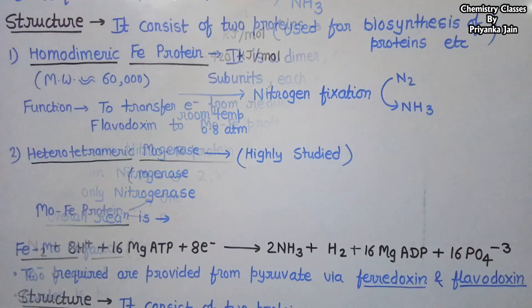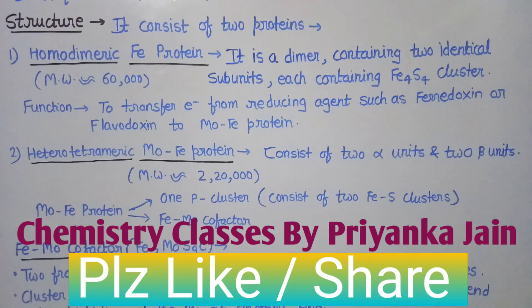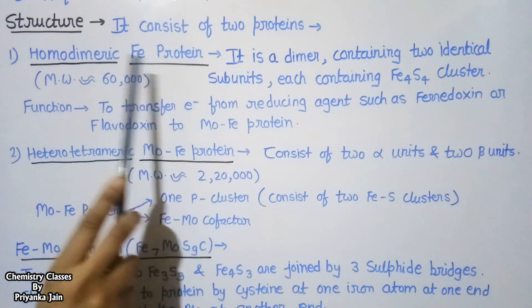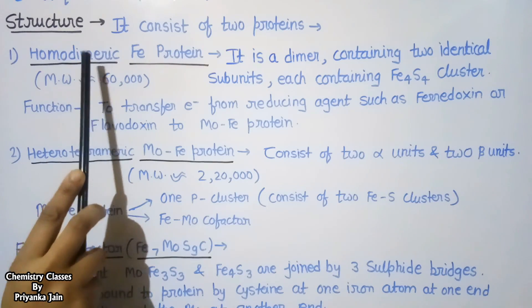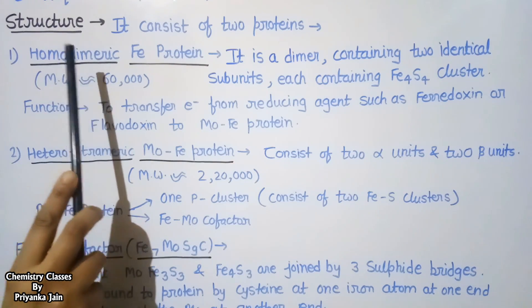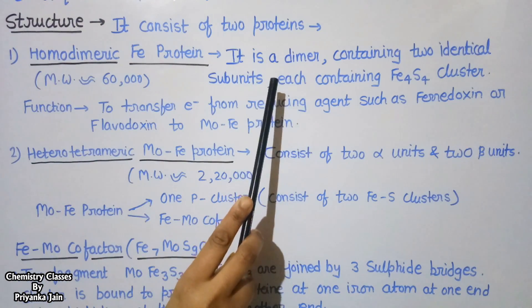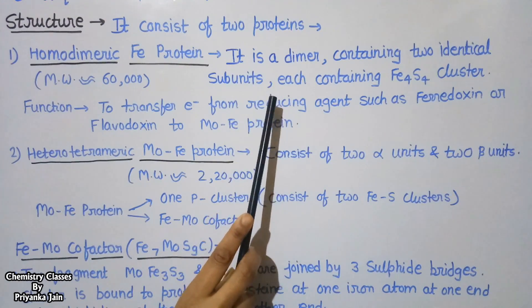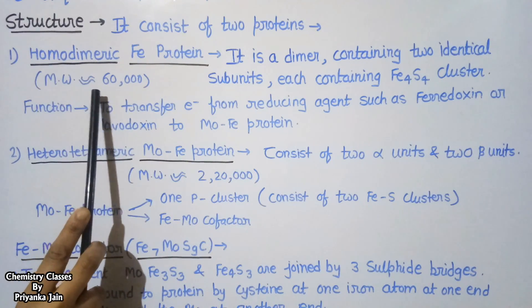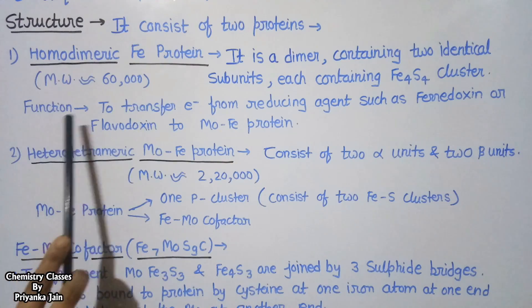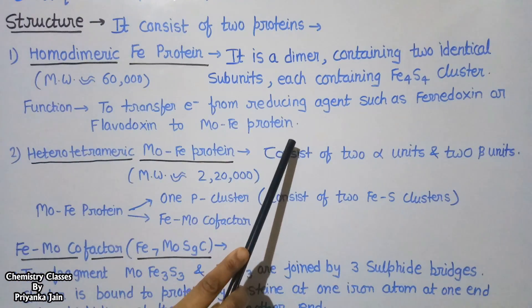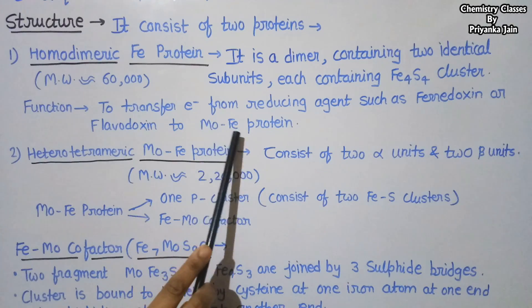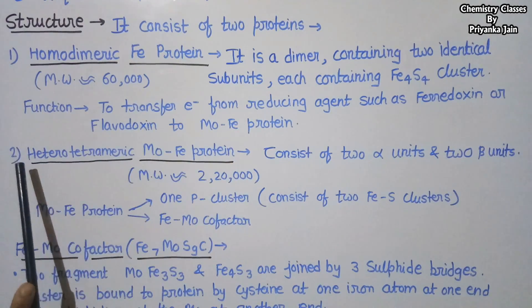The nitrogenase enzyme consists of two types of protein. The first is the homodimeric iron protein. Homodimeric means it is a dimer consisting of two units, and homo means both units are identical. Each unit possesses an Fe4S4 cluster, so there are two Fe4S4 clusters in total, and the molecular weight is approximately 60,000. The function of this protein is to transfer electrons from the reducing agent — ferredoxin or flavodoxin — to the iron-molybdenum protein.